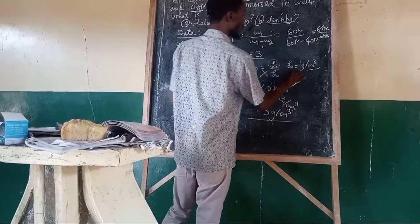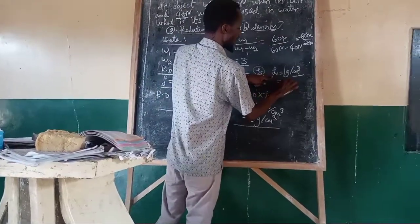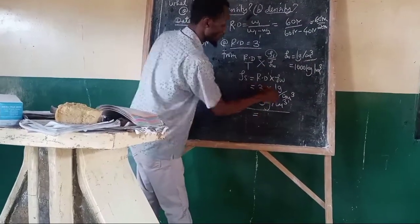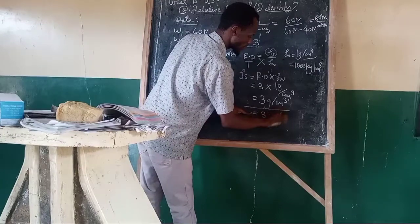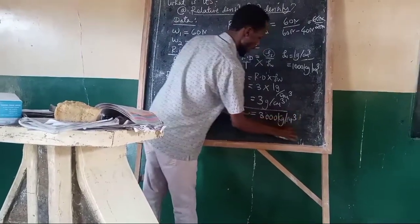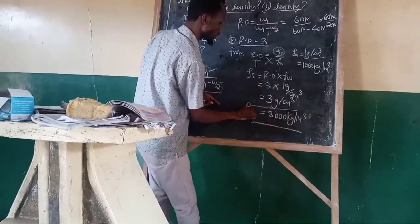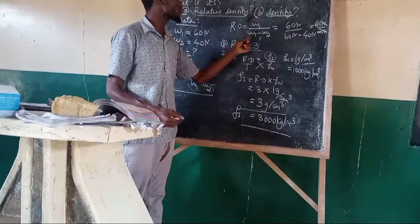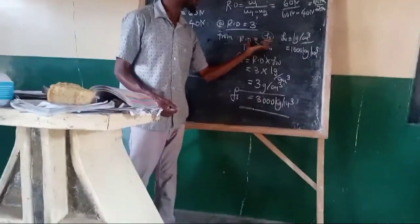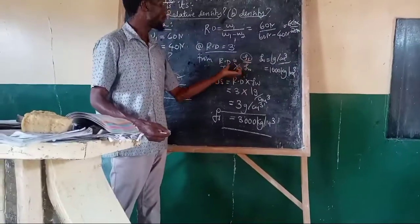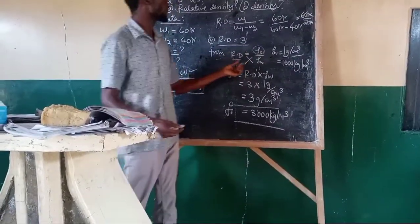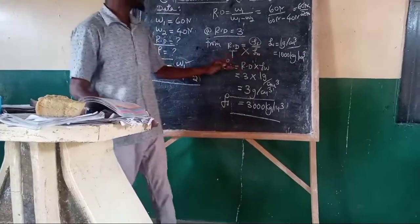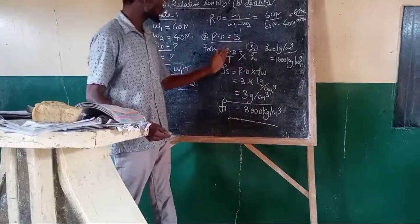If density of water is given in kg per centimeter cubed instead, then the density of substance would similarly be 3 kg per centimeter cubed. By using Archimedes' principle, we can determine relative density of the substance, and then use that to determine the density of the substance, which is a concept derived from the comparison between density of water and density of substance.